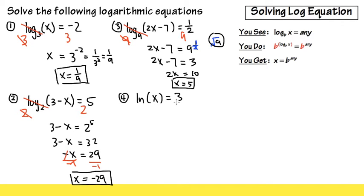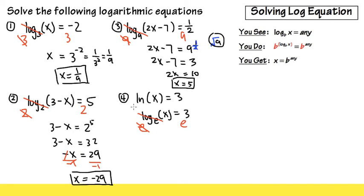Next one: ln of x is equal to 3. You can make a change first — ln is the same as log base e, and inside is x, equal to 3. If you make this change, then you see this is exactly the same form all over again. This time the base is e, so we do e to this power and e to that power. E and log base e cancel, we get x by itself, and this is equal to e to the third power.